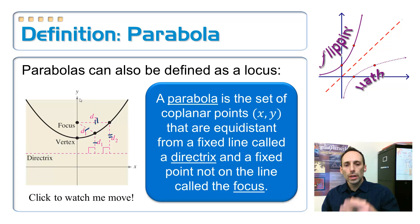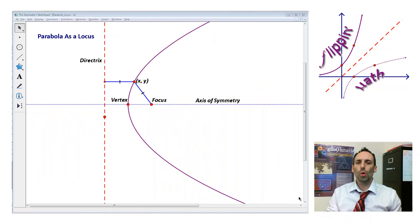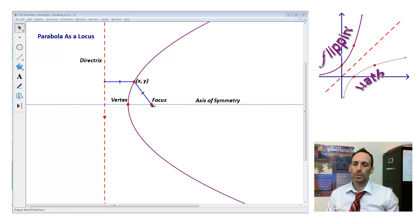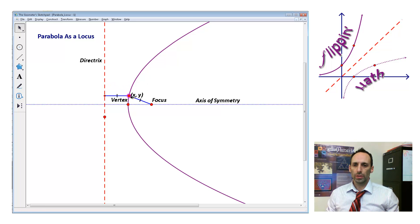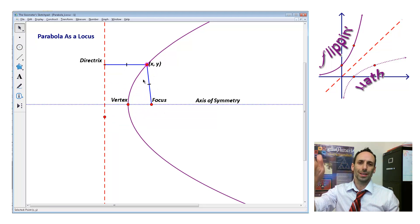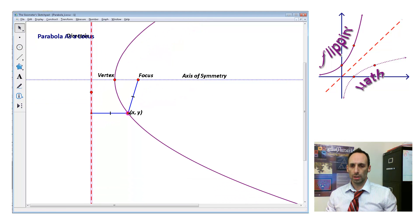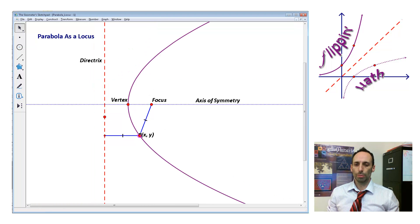Let's look at this on Sketchpad so you can see the relationship between the directrix, the focus, and the vertex. According to the locus definition, it's the set of all points the same distance from the focus and the directrix. If I move this point x, y anywhere, it's going to be the same distance away — you can see that in these two blue lines, they always stay exactly the same length. Whenever you measure the distance from a point to a line, it's always measured perpendicularly, so that line always stays perpendicular to the directrix.